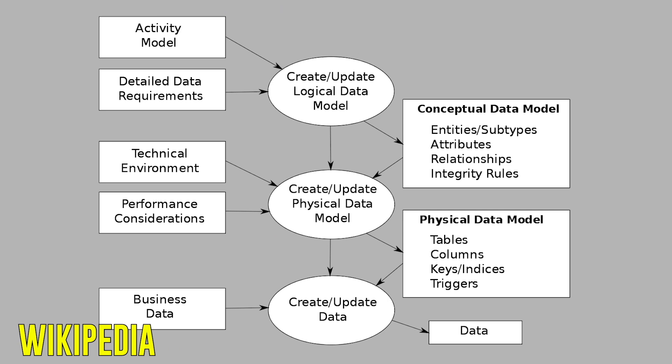Data modeling does not start at the data warehousing step. Data modeling happens at the business level, then goes into the operational system, and eventually ends up in the data warehouse. What you're trying to do is break it down into those three layers — conceptual, logical, physical — starting from the operational system and trying to understand the concepts that exist in your data model.